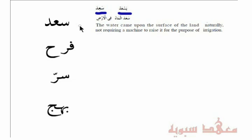But it actually means other things. For example, in this sentence: Sa'dah al-ma'u fi al-ardh — the water came upon the surface of land naturally, without requiring a machine to raise it for the purpose of irrigation. So that's something that will make somebody happy. If they want to irrigate the land and it happened just like that, without anybody doing anything, this would be cause for happiness. So similarly, the word Sa'dah actually means things going your way in life.